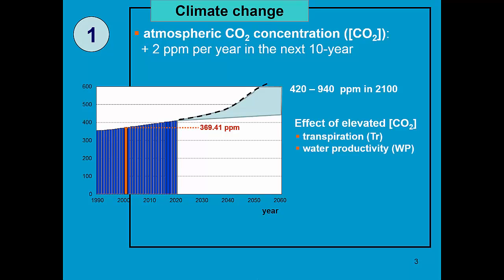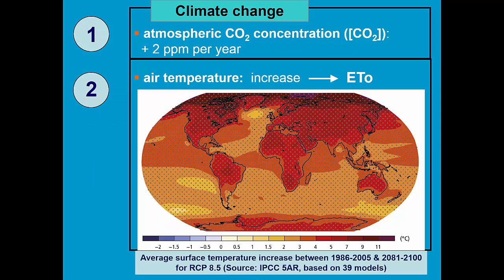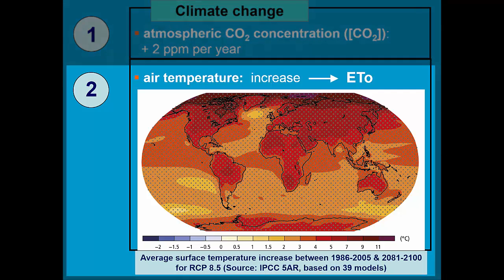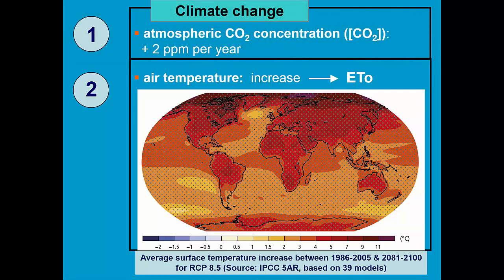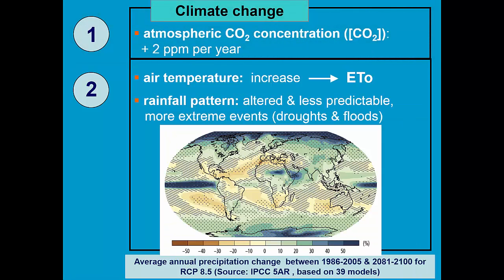The elevated CO2 concentration has an effect on transpiration and on the biomass water productivity. Due to that higher CO2 concentration, air temperature is increasing, and as a consequence, reference evapotranspiration will also increase. Here we see an IPCC map plotting the temperature increase in various parts of the world. Next to air temperature, the rainfall pattern is also likely to alter.